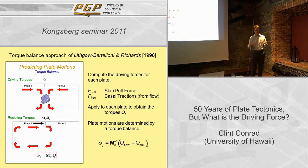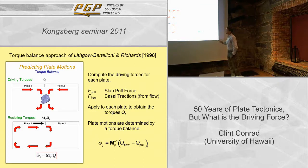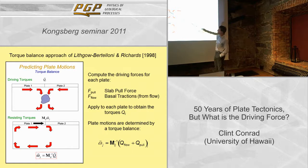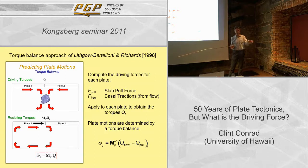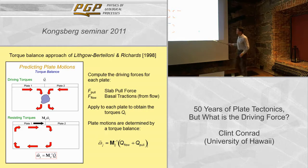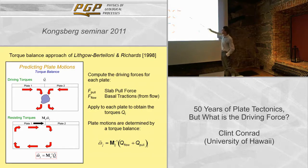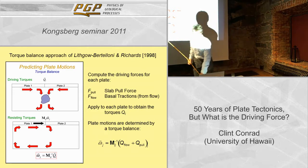Now let's balance the forces on all the plates to see if we can predict the plate motions. We do a torque balance for each plate — the net torque on each plate must be zero. We consider the driving forces: mantle flow pushing on the base of the plates, adding up all those torques for each plate. For resisting torques, we push each plate in each different direction in our mantle flow model and see the mantle's resistance. We then balance driving and resisting torques to get predicted plate motions.